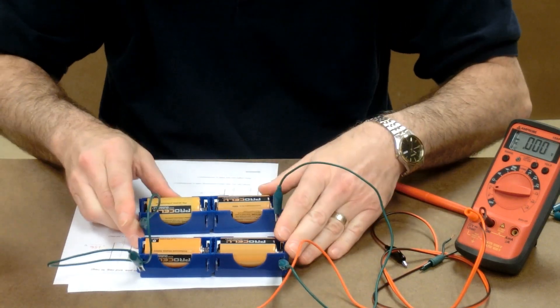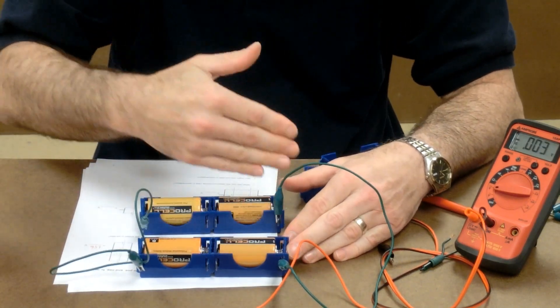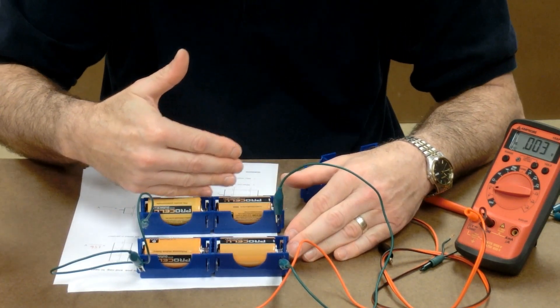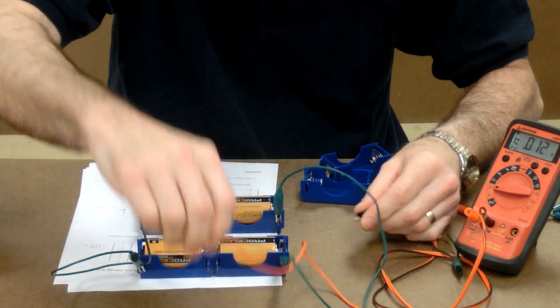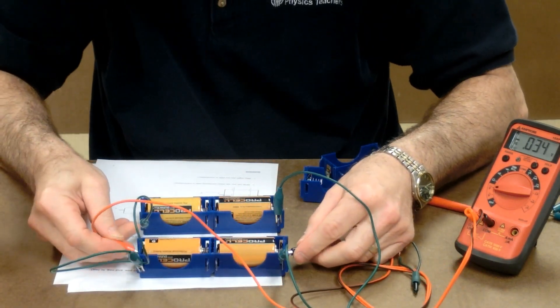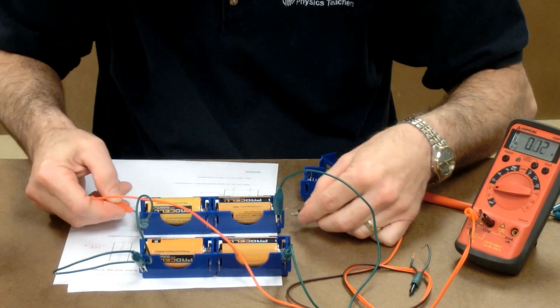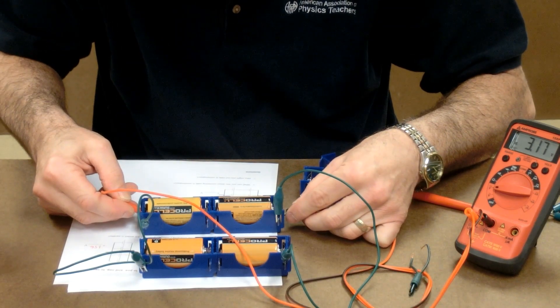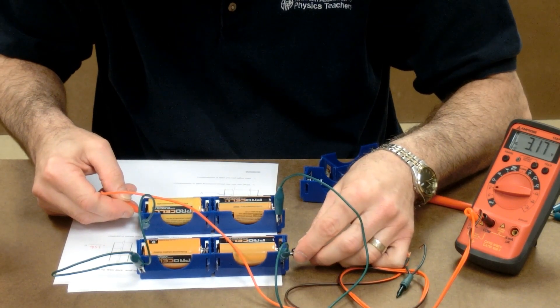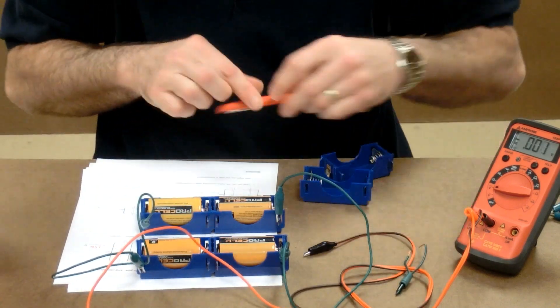So, this is a combination of two parallel branches with two cells in series in each branch. When I check the voltage here, I get 3.17, no matter where.